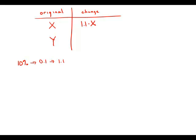To decrease Y by 10%, similar process — it's a decrease, so that's negative 10%, negative 0.1 — add 1 and we get 0.9. This is the multiplier for a 10% decrease. 0.9Y is a 10% decrease in Y.